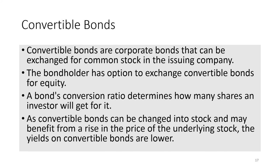Convertible bonds are corporate bonds that can be exchanged for common stock in the issuing company. A bond's conversion ratio determines how many shares an investor will get. A convertible bond gives the holder the option to convert or exchange it for a predetermined number of shares in the issuing company. As convertible bonds can be changed into stock and may benefit from a rise in the price of the underlying stock, the yields on convertible bonds are lower.